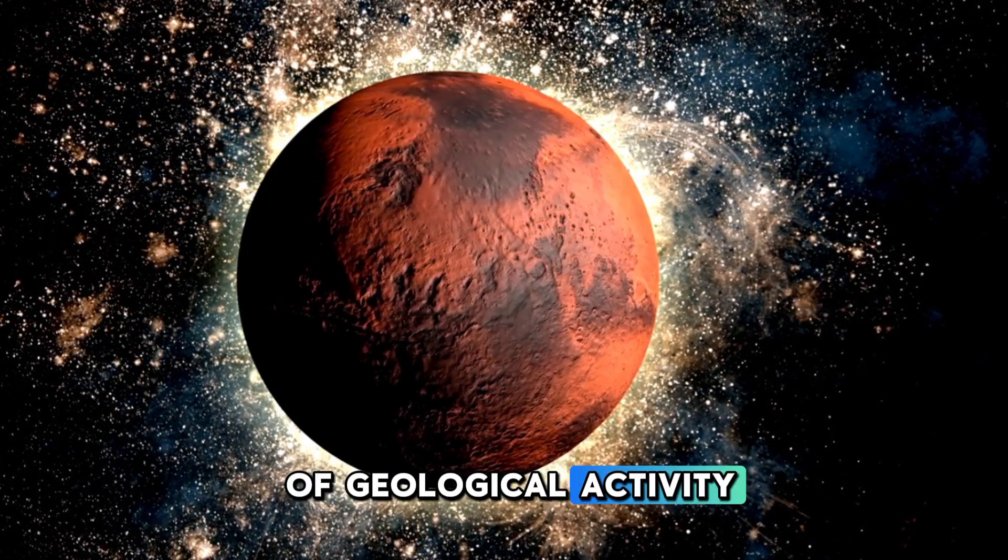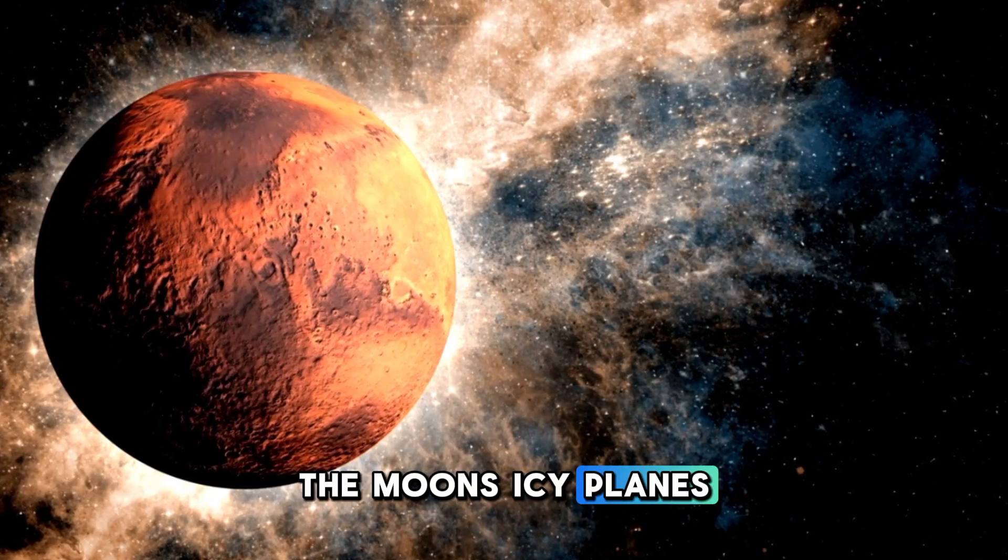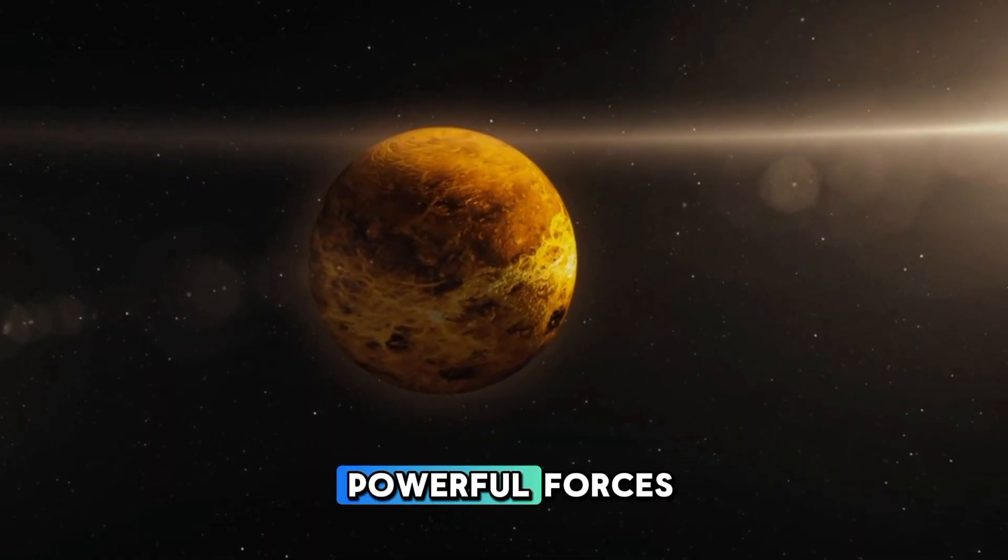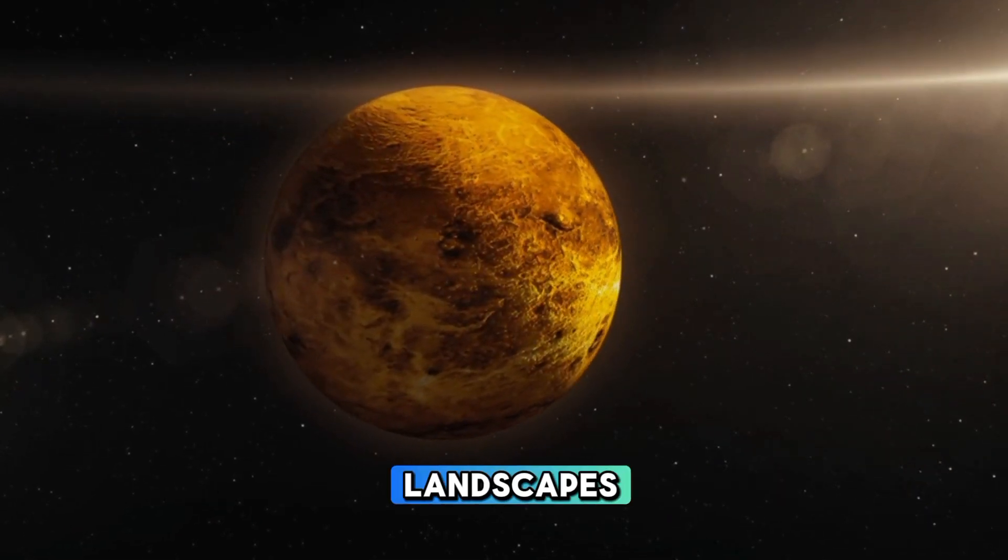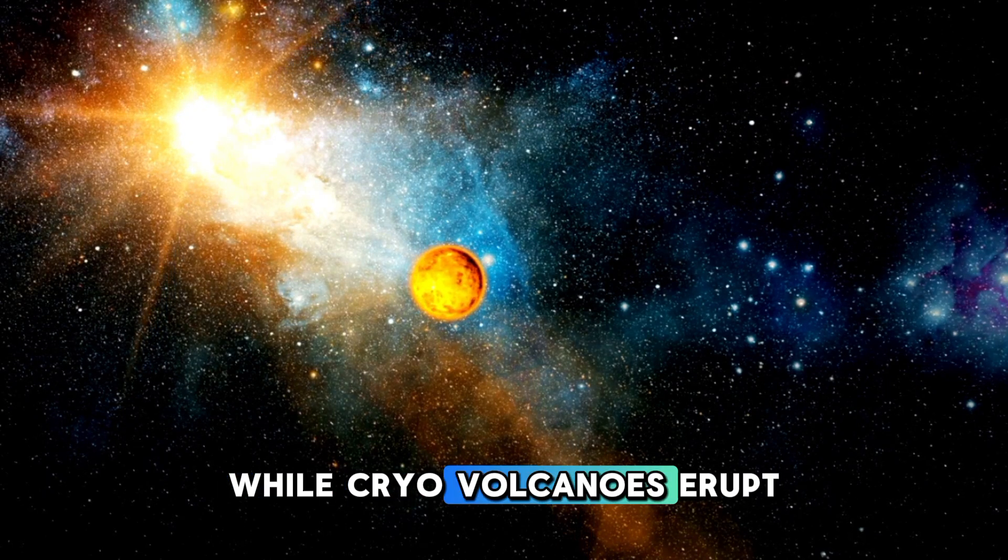The moon's icy plains and rugged terrain tell the story of a world molded by powerful forces. Nitrogen glaciers carve vast landscapes, slowly reshaping the surface, while cryo-volcanoes erupt with plumes of nitrogen, methane, and other volatile substances, replenishing its thin atmosphere.